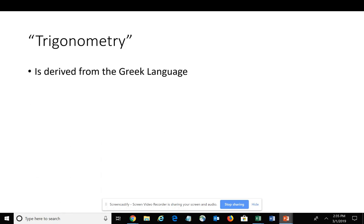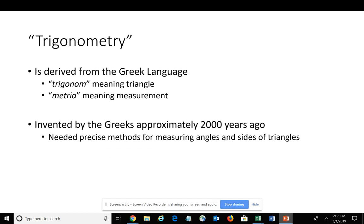Trigonometry is actually a word derived from the Greek language. It's a combination of two Greek words: trigonome, which means triangle in Greek, and metria, meaning measurement. So they put the two words together and you have trigonometry, which literally means measurement of triangles.